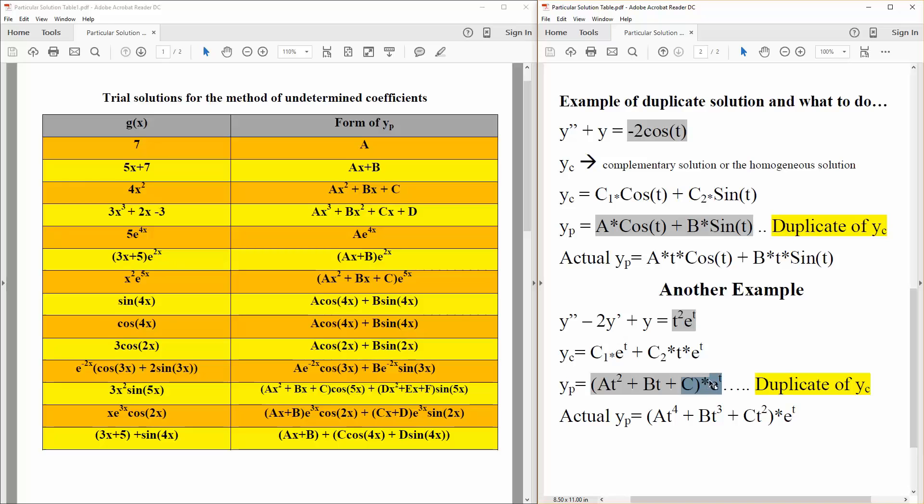If we multiply everything by t, like t cubed, t squared, c, t, we have another duplicate, this one right here. Because then we'd have a duplicate of this. And so instead, we would multiply by t squared. Now, we have at raised to the fourth, bt cubed, plus ct squared. And so if we do ct squared times e raised to t, just looking at this, this is unique from this. And that's why this would be our actual y_p. And that's about it.